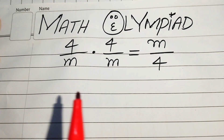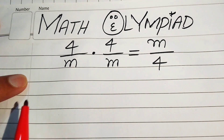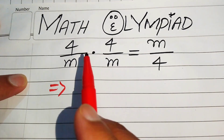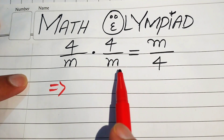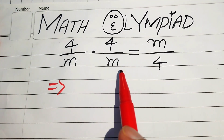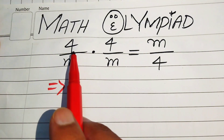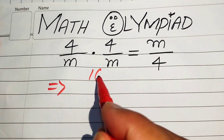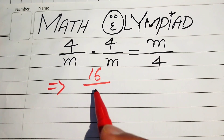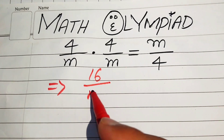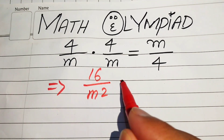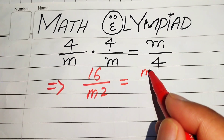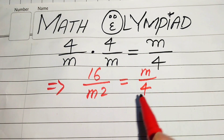The very first step we are going to do is multiply numerator by numerator and denominator by denominator. So we have 4 times 4 becomes 16, and m times m becomes m squared, equals m over 4.